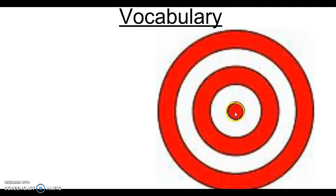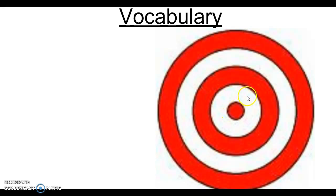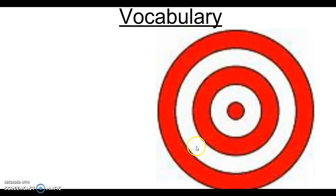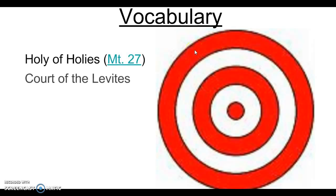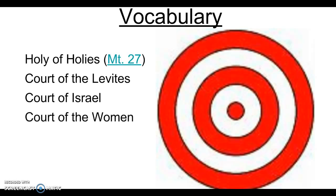The innermost part of the temple would be the Holy of Holies. Outside of that would be the Court of the Levites, or the Court of the Priests. Outside of that would be the Court of Israel. Outside of that would be the Court of the Women. And then finally, the Court of the Gentiles. I'm going to list them right here, and you can begin writing some definitions for them.